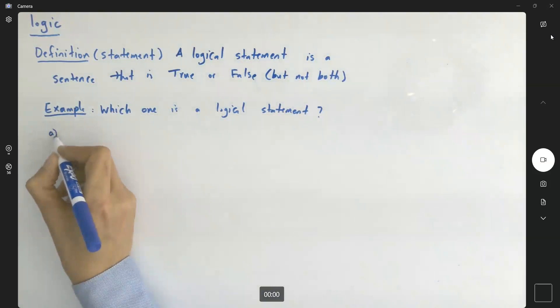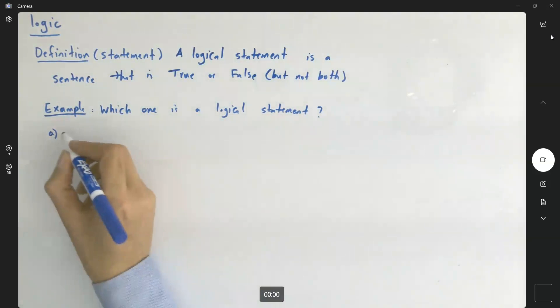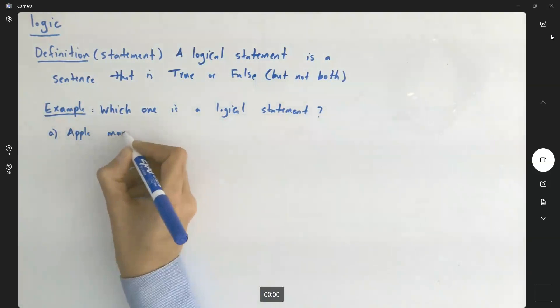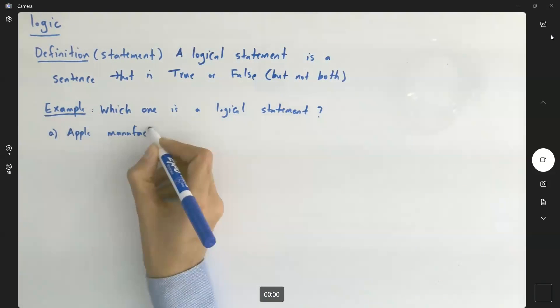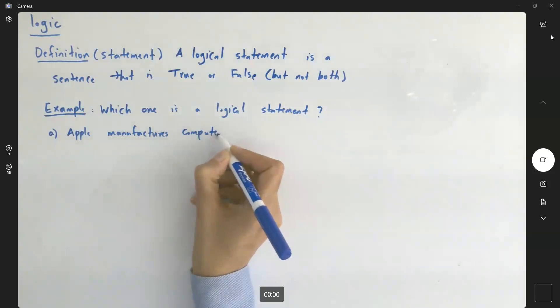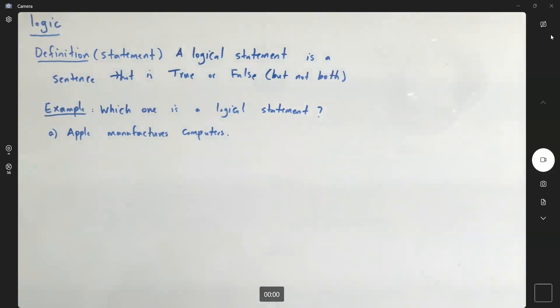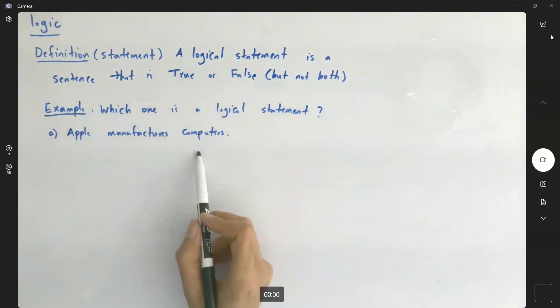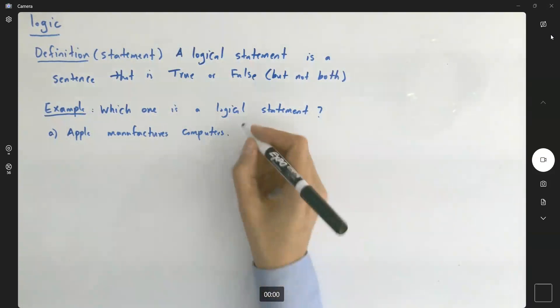The very first example says, Apple manufactures computers. Very good. So is this a logical statement? Can we investigate the truth or falsity of this statement? Yes, since we know that.